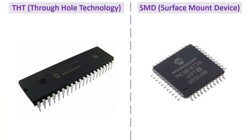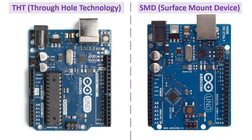For example, on the left there is the THT type of the PIC16F877A model microchip controller belonging to Microchip company, while on the right there is the SMD model IC of the same model belonging to the same company. Likewise, on the left on the Arduino UNO development board there is a THT type microcontroller of Atmel company, while on the right there is an SMD model IC of the same company.